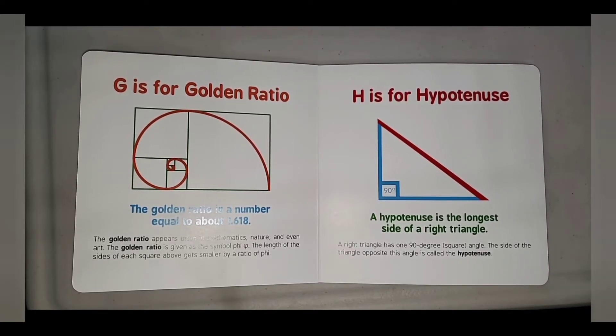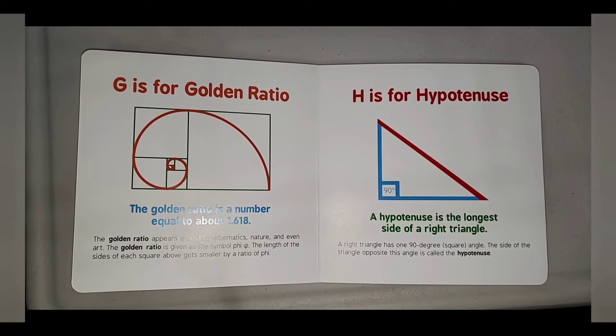H is for Hypotenuse. The hypotenuse is the longest side of a right triangle. A right triangle has one 90 degree square angle. The side of the triangle opposite this angle is called the hypotenuse.